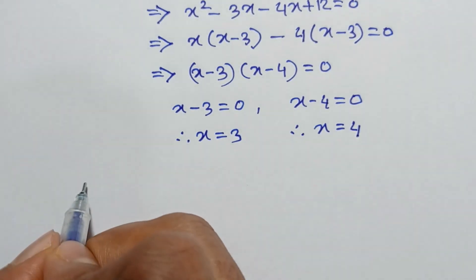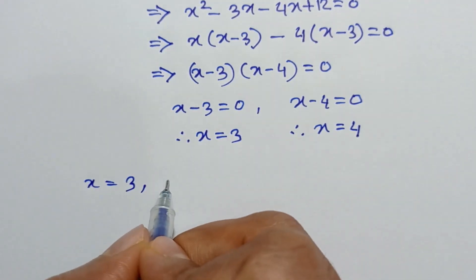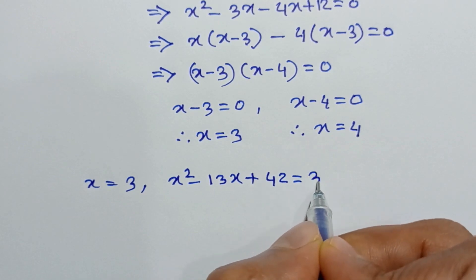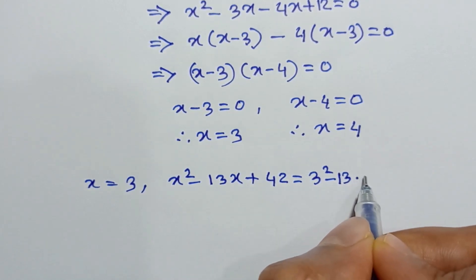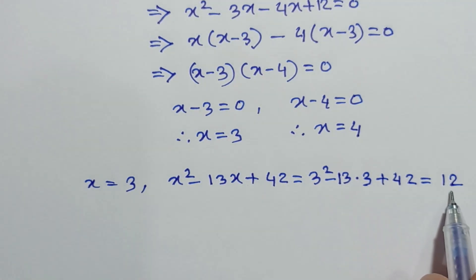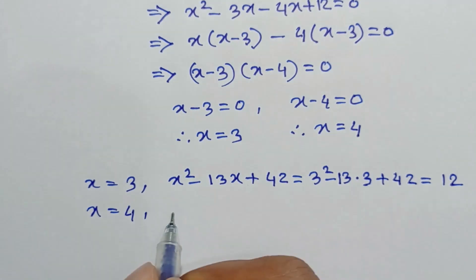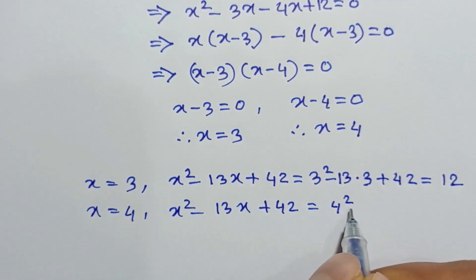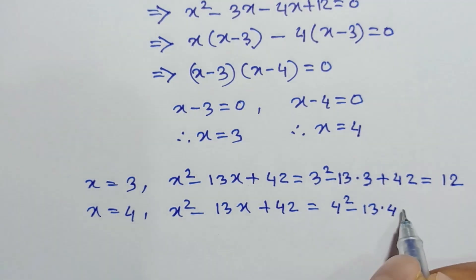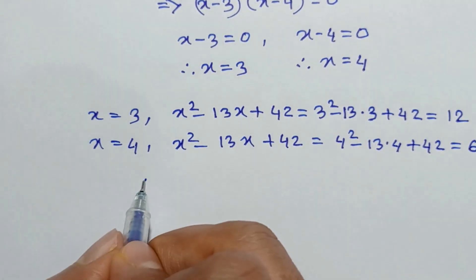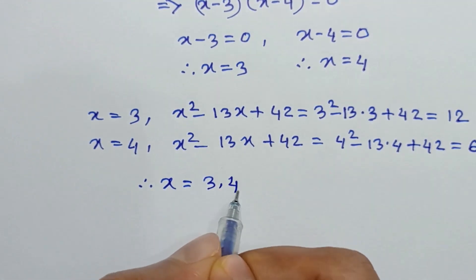Now when x = 3, the value of x² - 13x + 42 = 9 - 39 + 42 = 12, which is an even number. And when x = 4, the value of x² - 13x + 42 = 16 - 52 + 42 = 6, which is also an even number. So in this case we got x = 3 and 4.